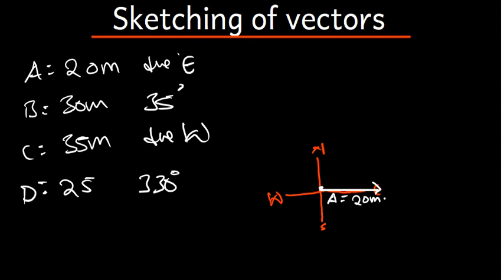From the end point of vector A, I make another x-y plane. Vector B is 35 meters at 35 degrees. Is 35 degrees near north or east? It's near east. So the vector goes in that direction, a bit longer than vector A. That is vector B, which is 30 meters. You can indicate the angle — this angle here is 35 degrees.